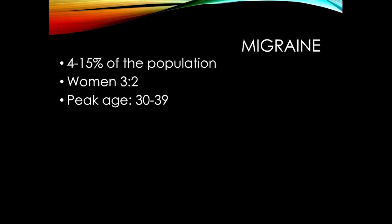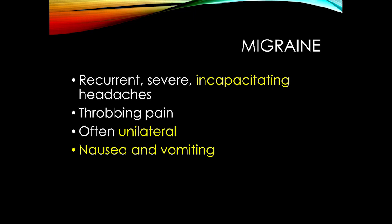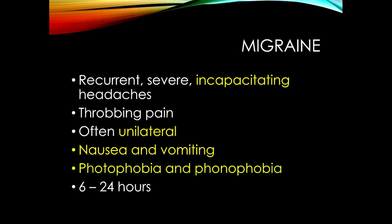Migraine is slightly more common in women, with peak age between 30 and 39, though children and the elderly can also have migraines. The classic description is an incapacitating headache — unlike tension-type headache, someone with a migraine generally can't function. Pain is often throbbing, on one side more than the other. Nausea and vomiting are very common. Always ask about light and sound sensitivity — photophobia and phonophobia are classic features of migraine.